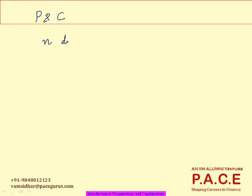The most common scenario is whenever we have N different options possible — N different scenarios available. This is a very common situation: we have N different scenarios, and out of that, we have to select only some R of them.